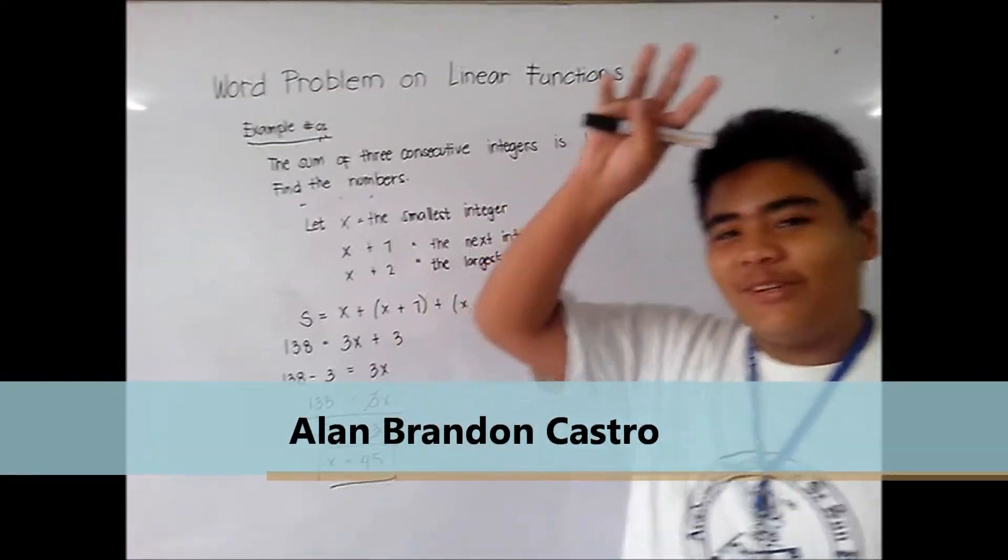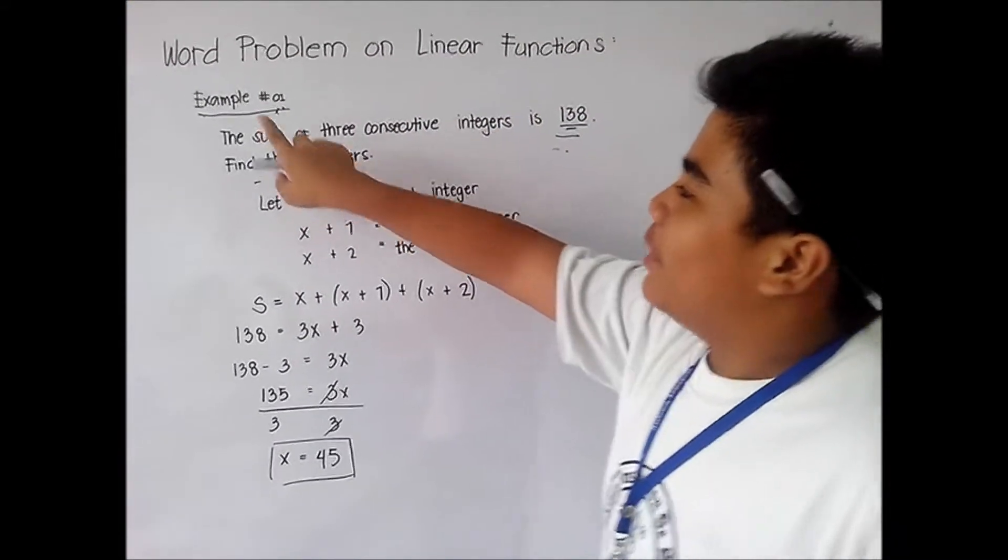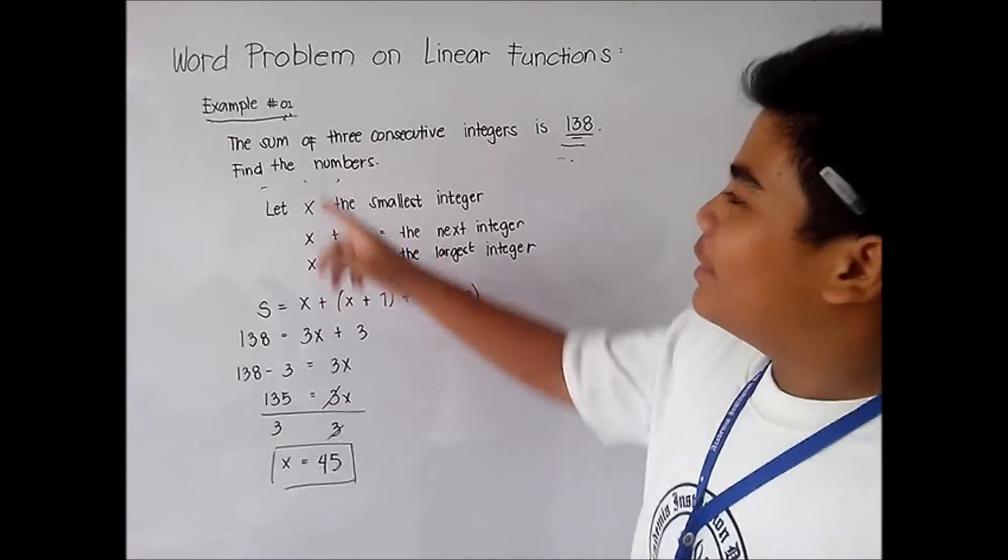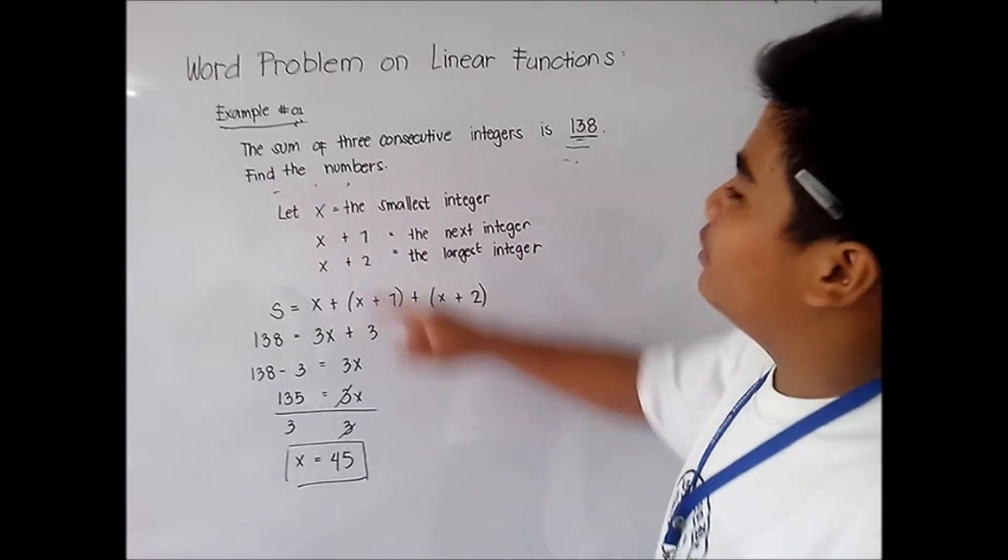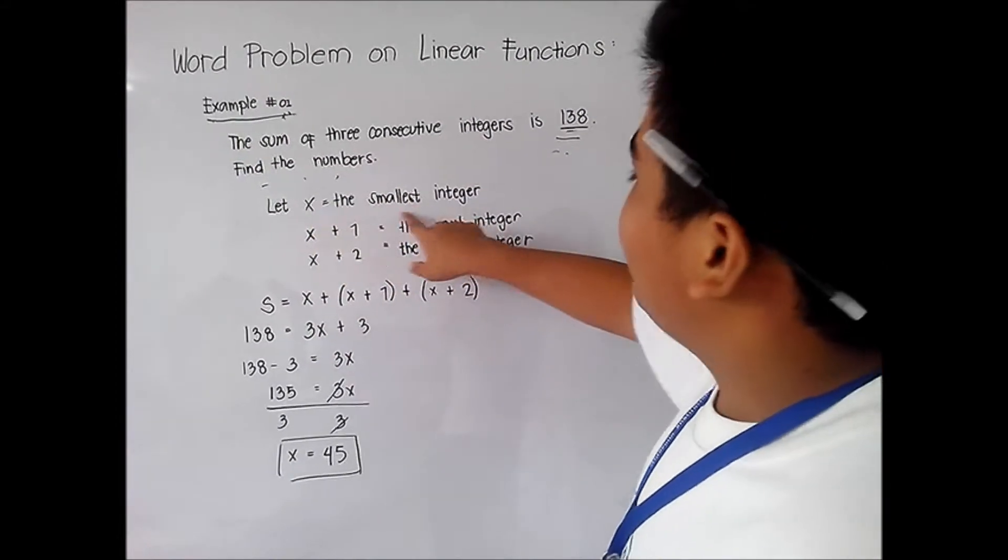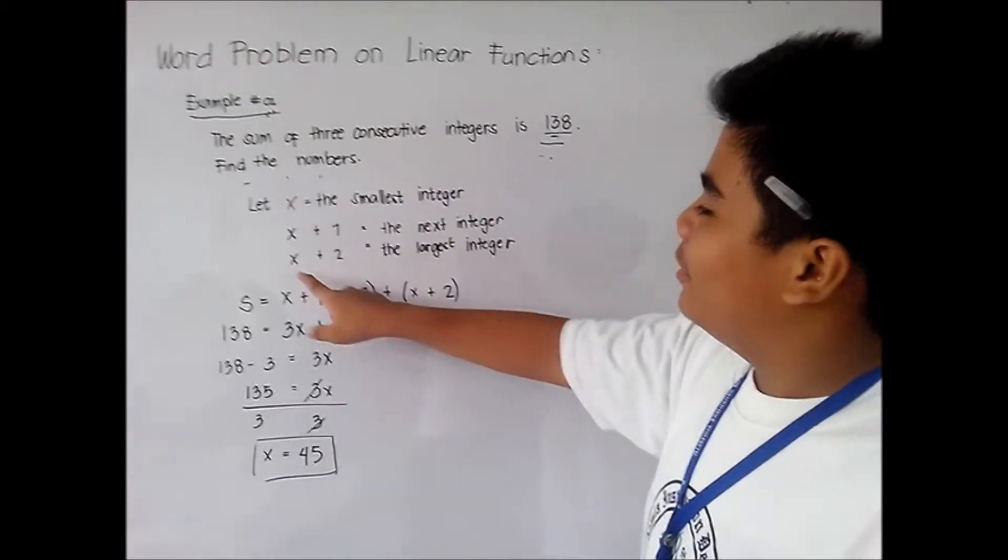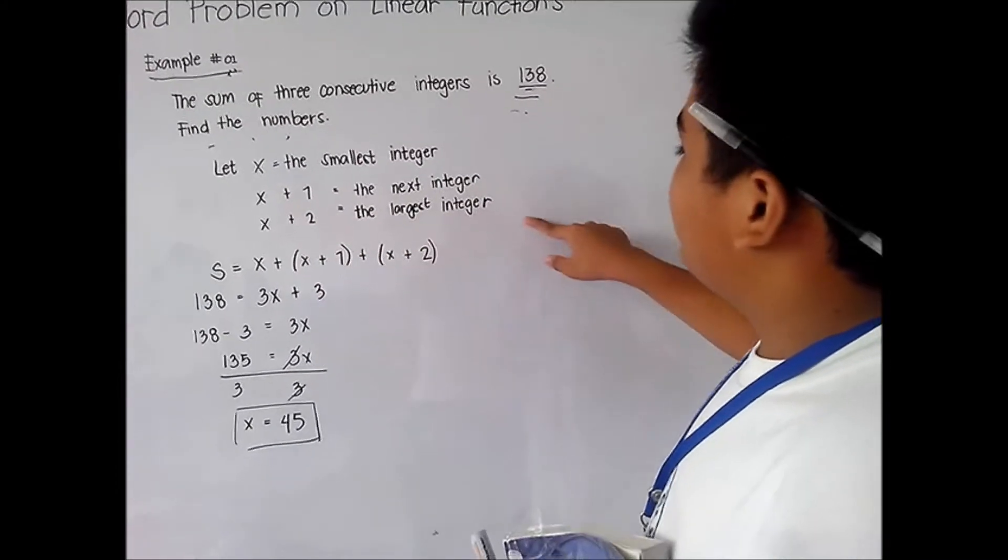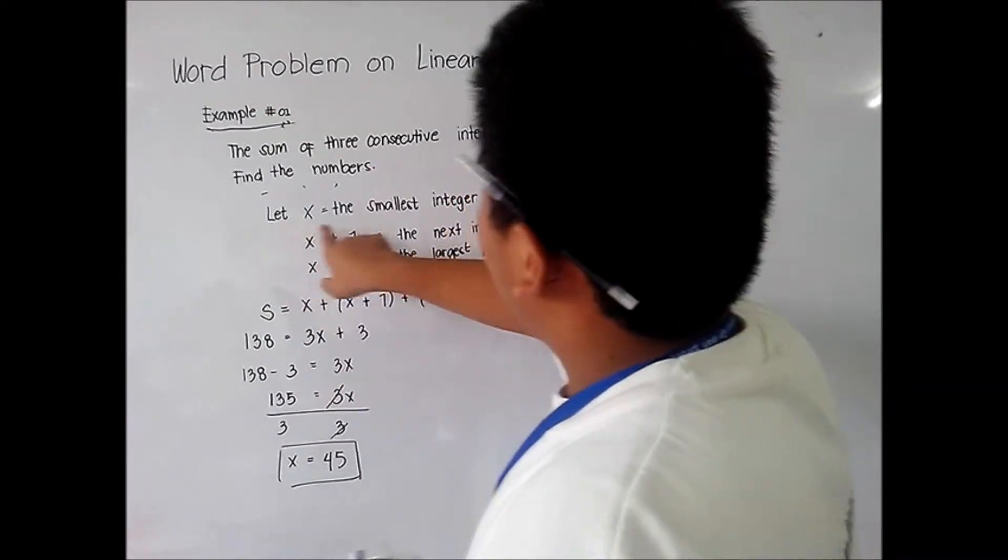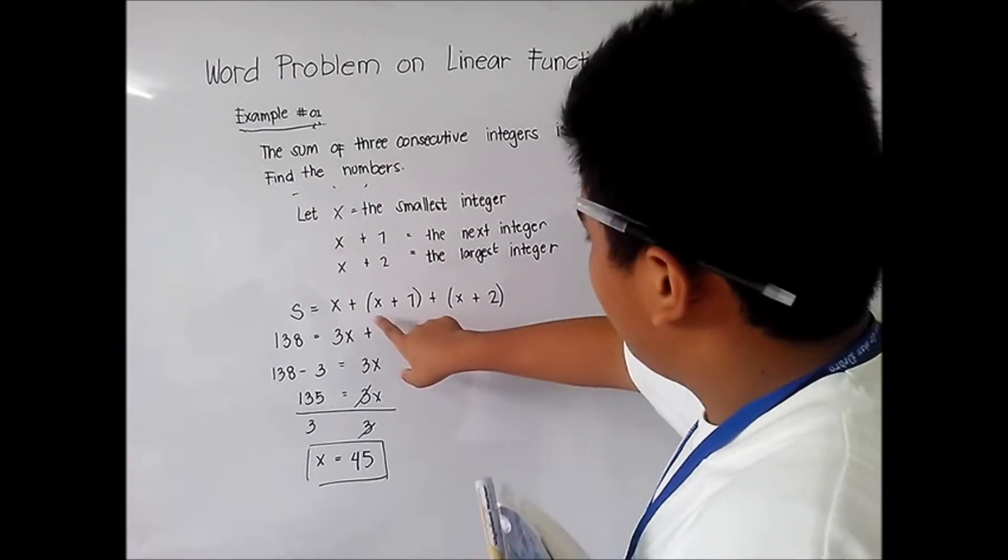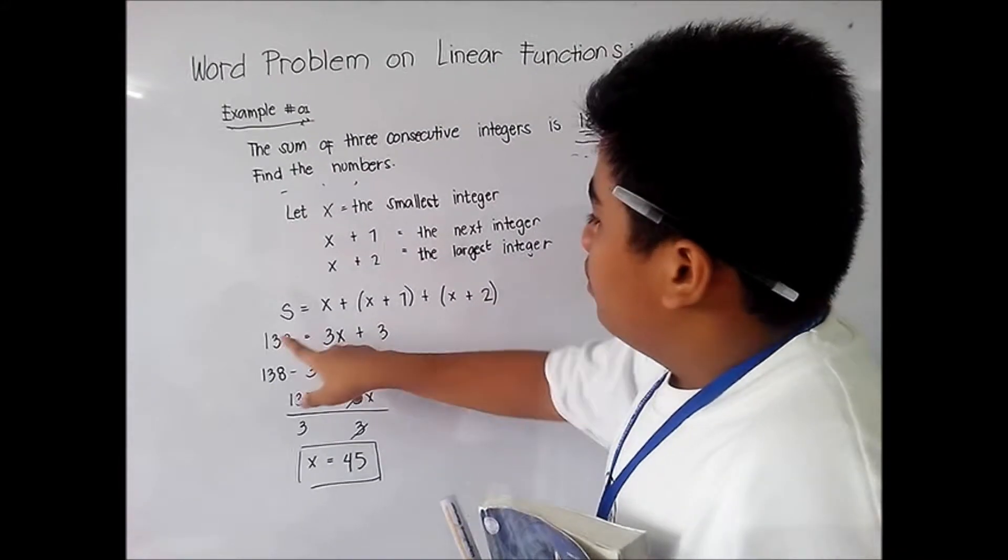Word problem on linear function: The sum of three consecutive integers is 135. Find the numbers. Let x equal the smallest integer, x plus 1 equals the next integer, x plus 2 the largest integer. So sum equals x the smallest integer plus the next integer x plus 1 plus the largest integer x plus 2.